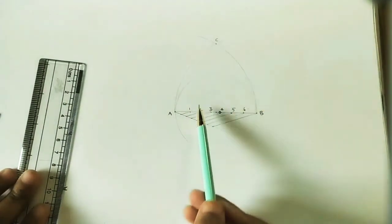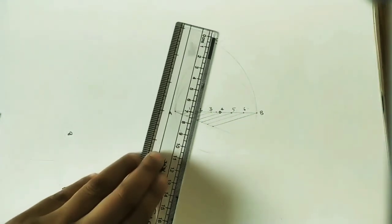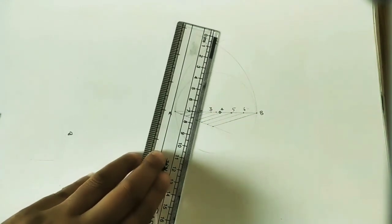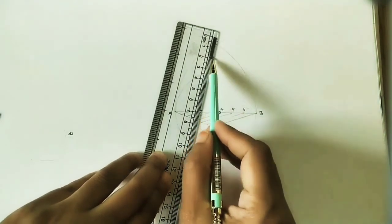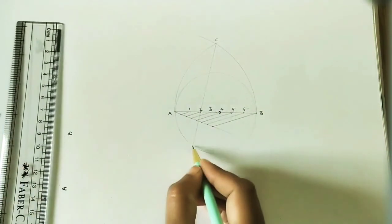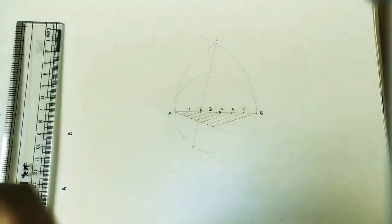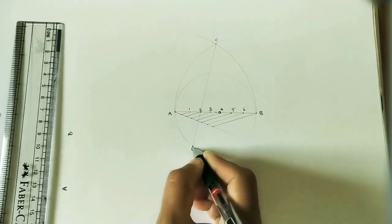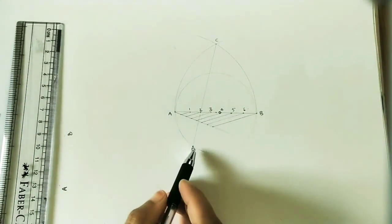Extend the line up to the circle. This intersection point we can take as D. It is the length of one of the sides of the heptagon.